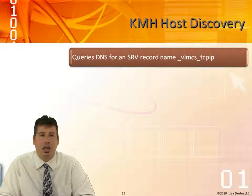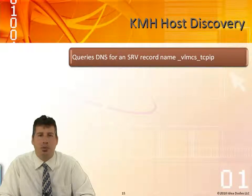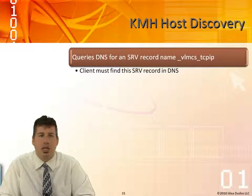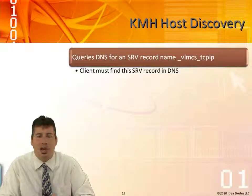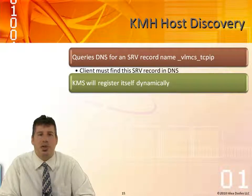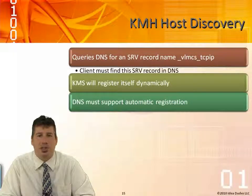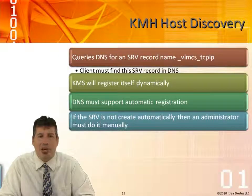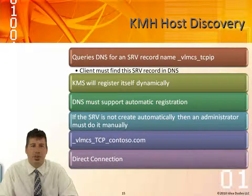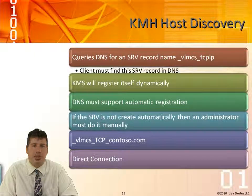For host discovery, when a client has a volume license key, it needs to find the KMS. The client queries DNS for an SRV record named _VLMCS._TCP, which points to the actual KMS server. The client must find this SRV record in DNS, which is why DNS is required in the environment. The KMS registers itself dynamically in DNS when activated, and DNS must support automatic registration — this is the default with Active Directory integrated DNS. If the SRV record is not created automatically, an administrator must create it manually.